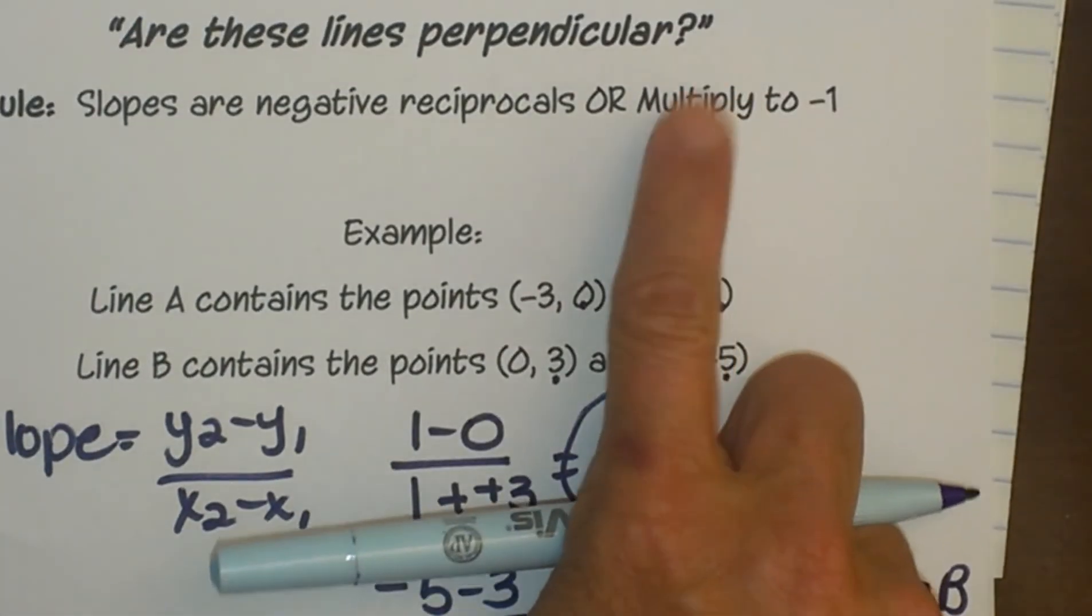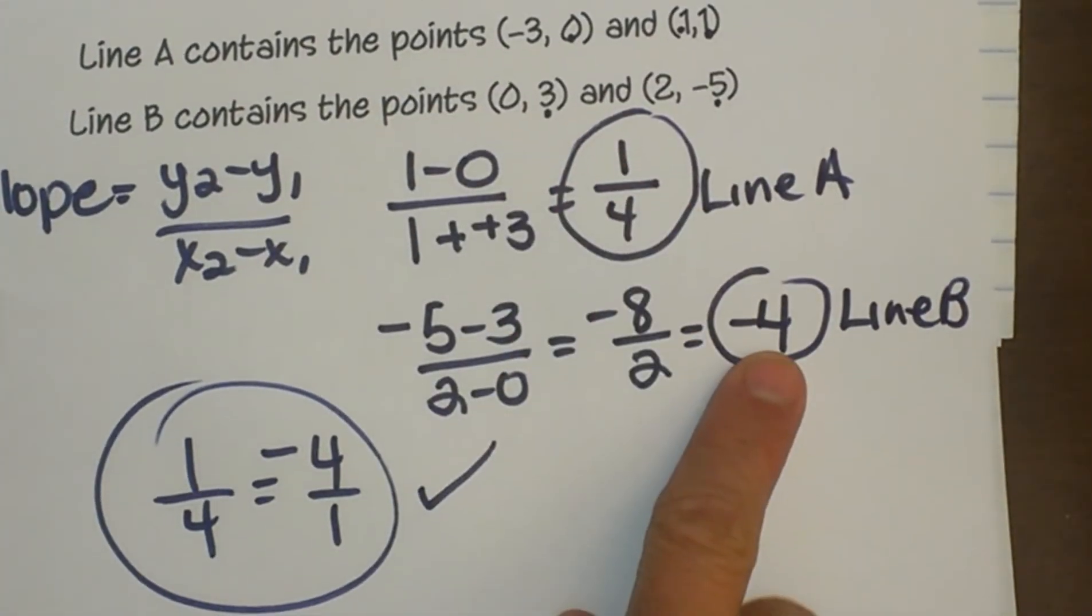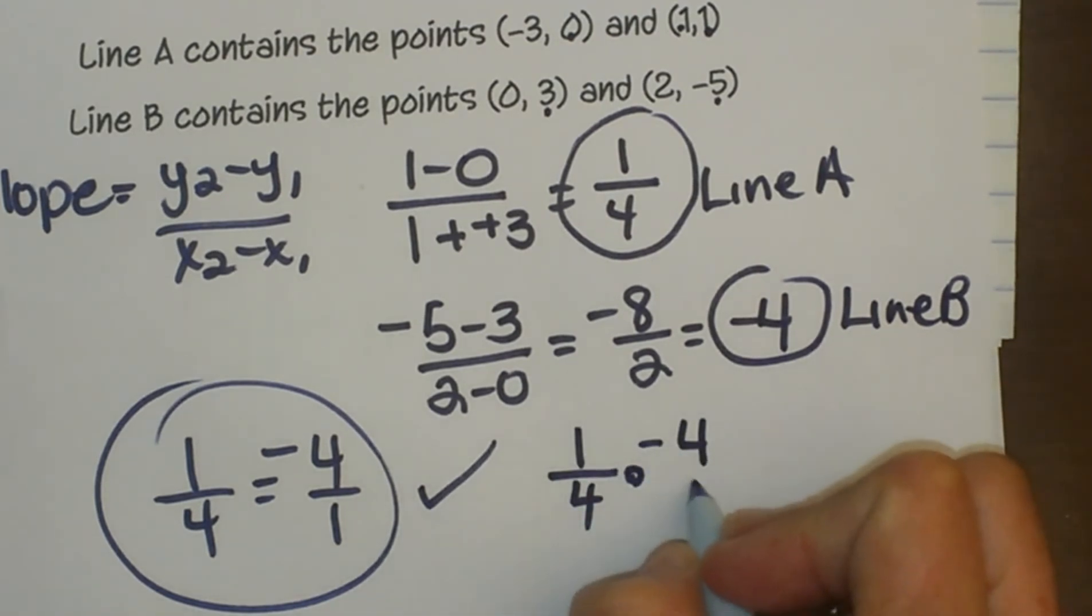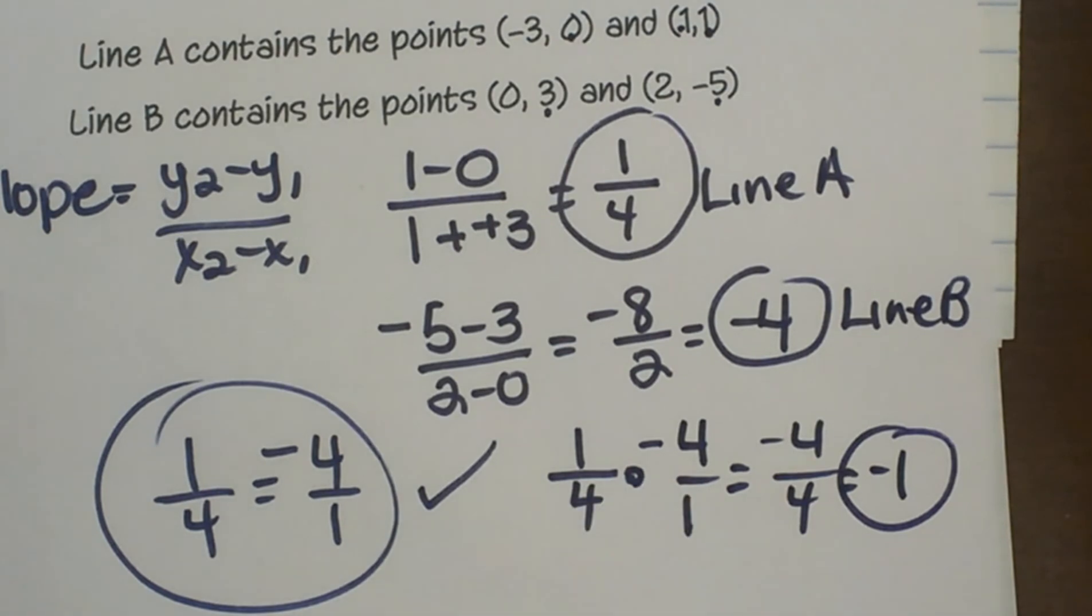Let's do the second test. The second test is that they multiply to negative 1. So let's just multiply these two slopes together: 1/4 times negative 4 over 1, and that gives me negative 4 over positive 4 which is negative 1. Sure enough, that works too. So you have two ways to check it.